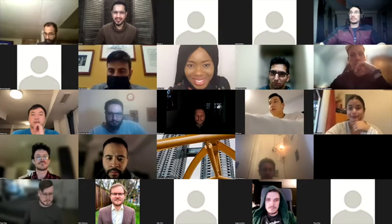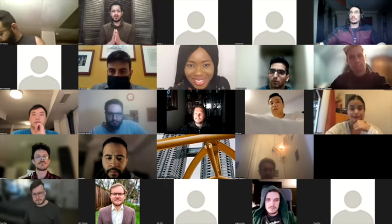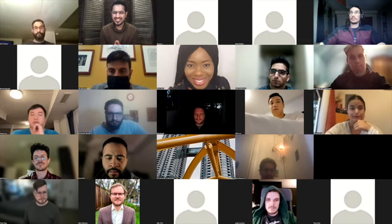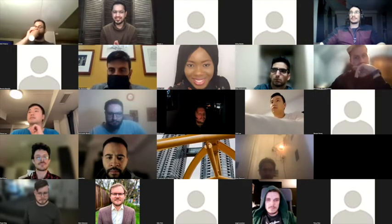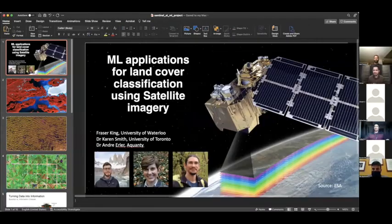Okay, the next working group we have in NRCan is focused on land cover classification using satellite images as well. That group will be led by Fraser King. He's currently a PhD candidate at the University of Waterloo. With that, Fraser King.